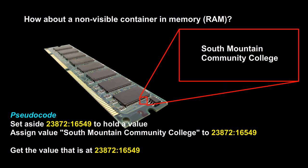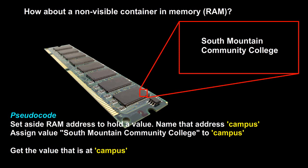Those addresses are a sequence of numbers, but working with those numbers is pretty difficult. There's no way we can remember them off the top of our head, and the chances of making a mistake by transposing numbers is probably pretty high. So in programming, we assign a name to an address in memory, and that name is what we call the variable. We can set aside a RAM address, name it — for example, campus — and assign the phrase South Mountain Community College to it. To retrieve that value later, all we have to do is refer to the campus variable name.